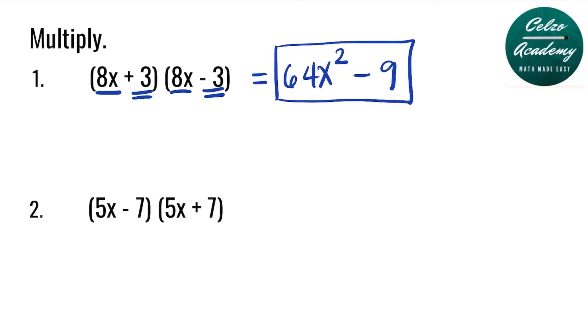Another way of doing this is to square the first term minus square the second term — so the same thing: 64x squared minus 9.